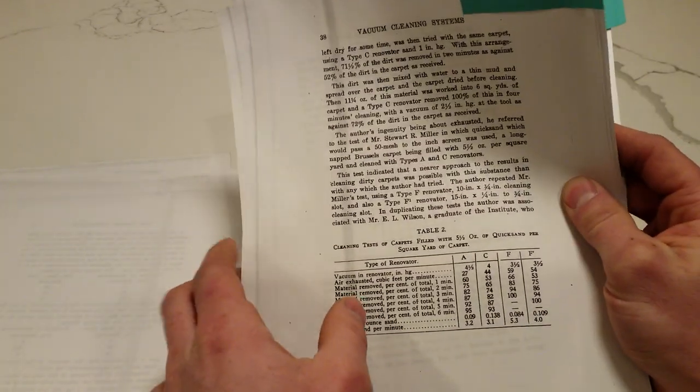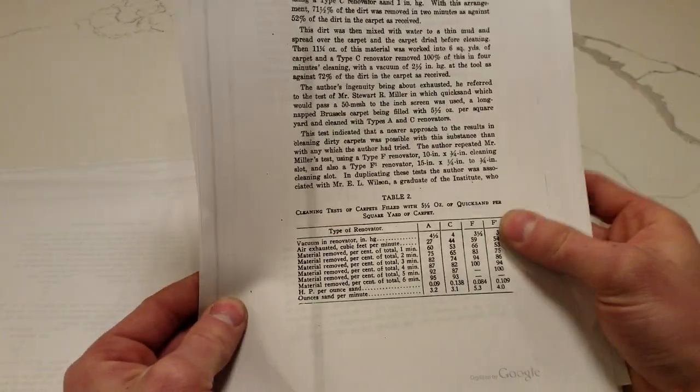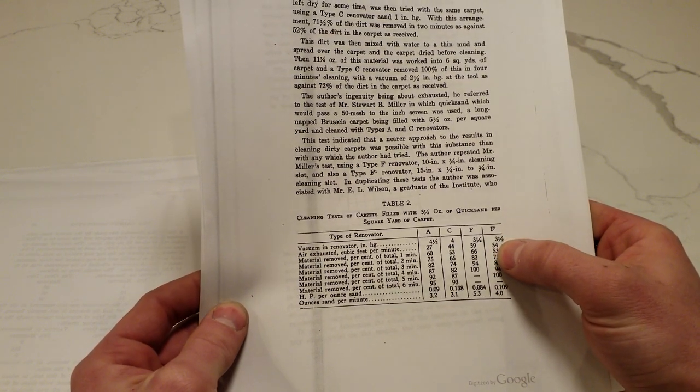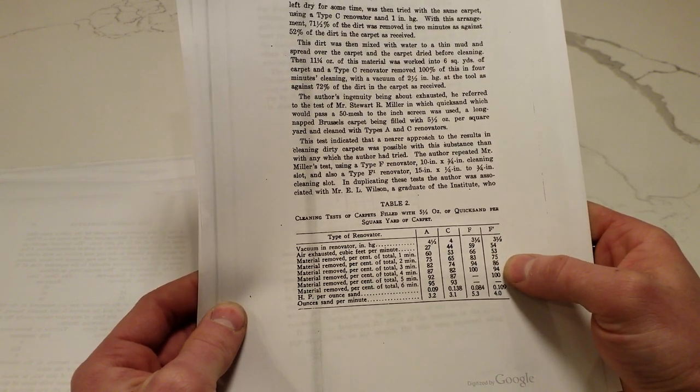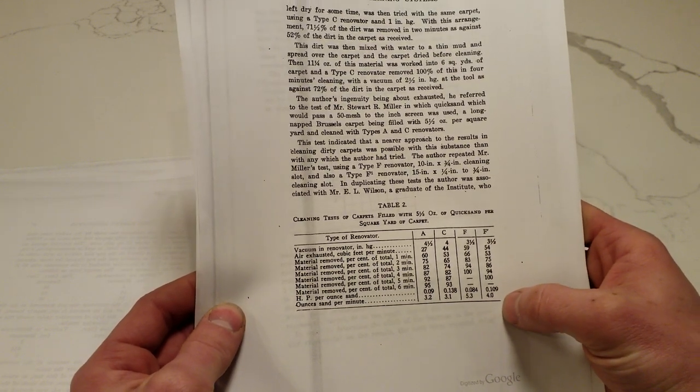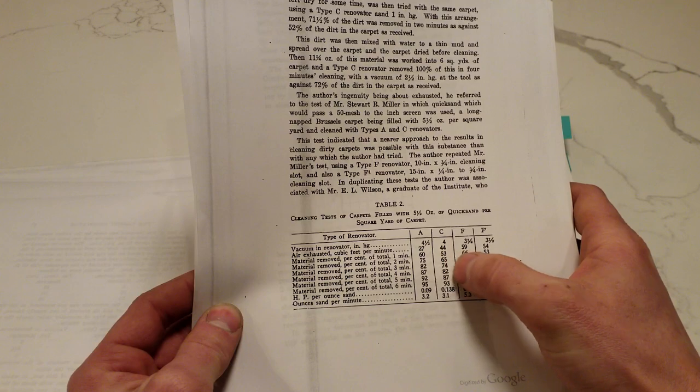We've got some charts. Vacuum and renovator. Air exhausted and CFM. Material removed percent of total. Horsepower per ounce of sand, ounces of sand per minute. Organized by the different type of renovators.